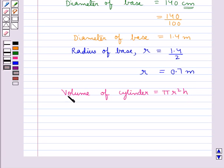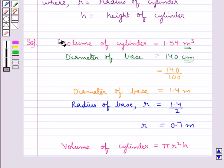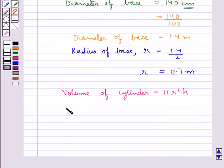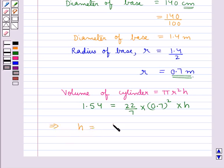Now we shall substitute the values for the volume and the radius r to find the value of the height. We have volume of cylinder is equal to 1.54 meter cube.